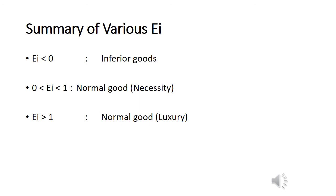Goods can be inferior or normal. We split normal goods into two types: necessity and luxury. For a necessity, people will buy more or less of the good but the change will be small — they can't do without it, so they buy a little bit more when richer or a little bit less when poorer. For a normal luxury good, it is very different — the change is more than proportionate to the change in income. Consumers tend to buy a lot more of a luxury good when they are richer and buy a lot less when they are poorer.